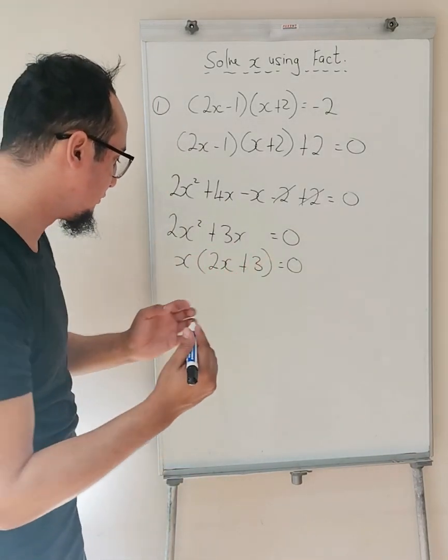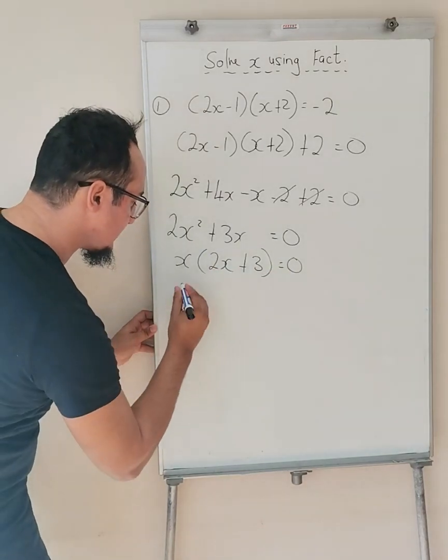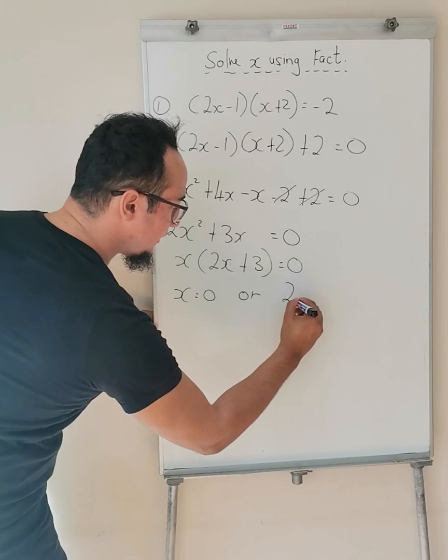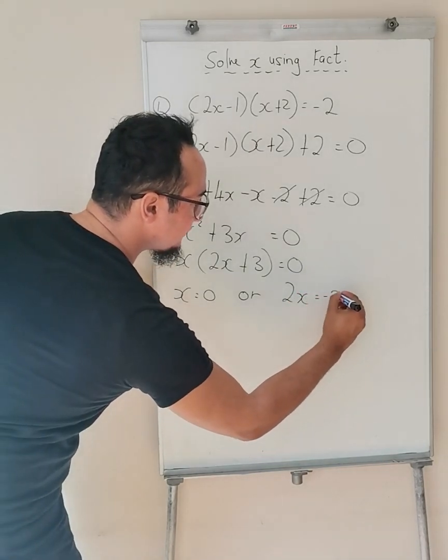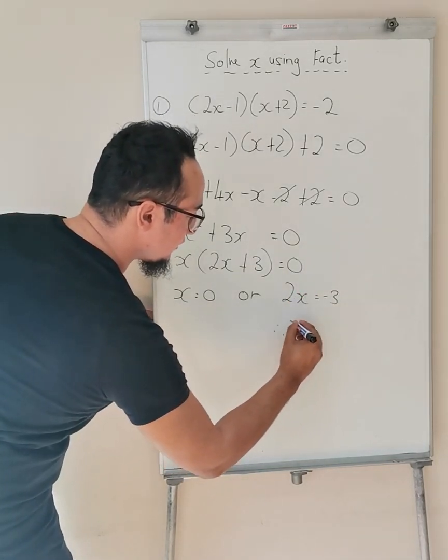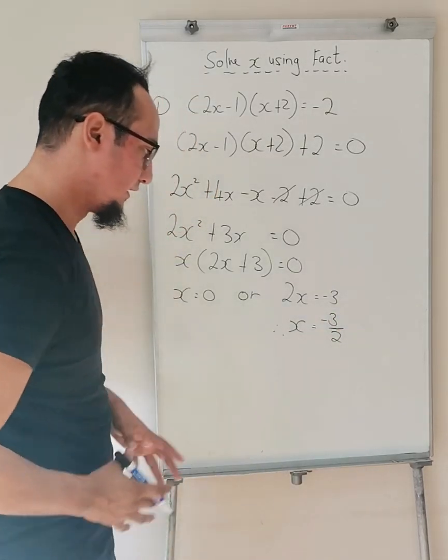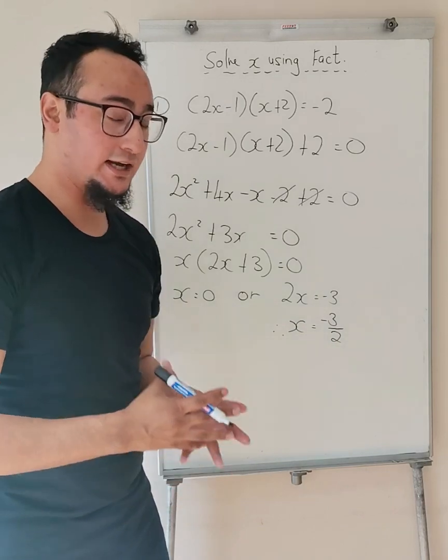And this is the easy part. This is what you know. X is equal to zero, or 2X is equal to negative 3. Therefore, X is equal to negative 3 over 2. Notice two values for X.